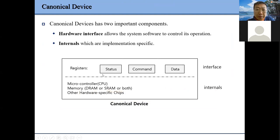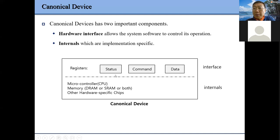An IO device provides this kind of interface: a status register, a command register, and a data register. When we want to interact with an IO device, mainly through instructions from the CPU, we can check the status, send the command, pass through data, or read data from the IO device.